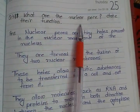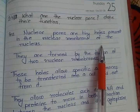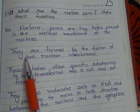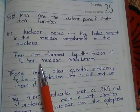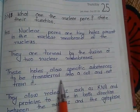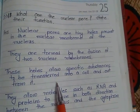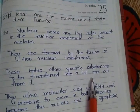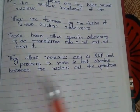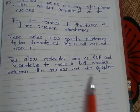Question 11: What are nuclear pores? State their function. Nuclear pores are tiny holes present on the nuclear membrane of the nucleus, formed when two nuclear membranes fuse. These holes allow specific substances to be transferred into and out of the cell, and allow molecules such as RNA and proteins to move in both directions between the nucleus and the cytoplasm.